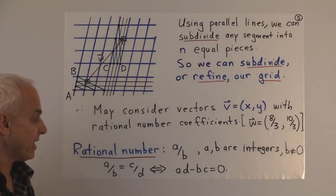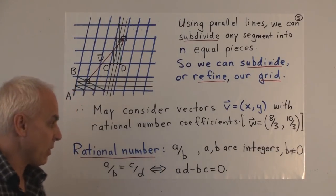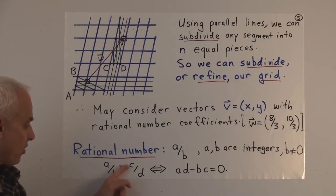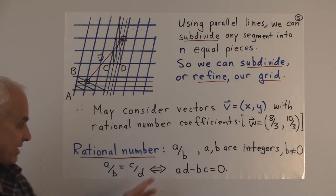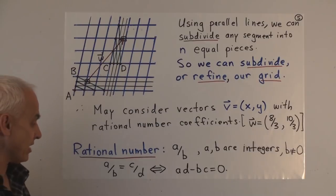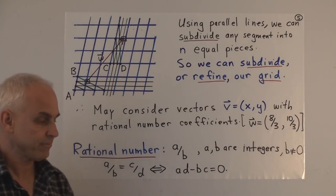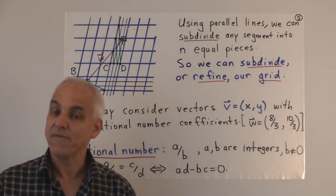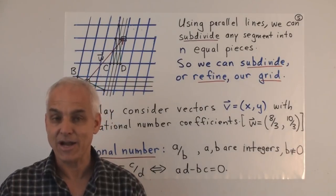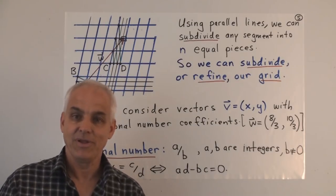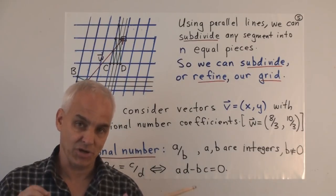A rational number is an expression of the form A over B, where A and B are integers and B is not equal to zero, with the important equality rule that A/B equals C/D precisely when AD minus BC equals zero — for example, 2/3 is the same as 4/6. Our vectors can have rational number entries. For now, at least, we're not going to consider any other kind of numbers. We're going to be working with linear algebra, at least for the first little while, purely in terms of the rational number system.